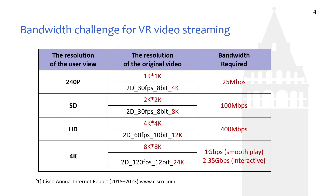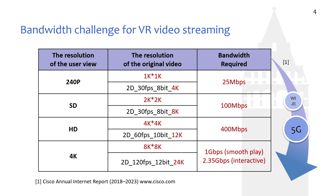From this table, we can see that if the user wants to watch an SDVR video in the user view, the overall resolution for the original video is about 8K, and it requires a bandwidth of 100 Mbps, which could be supported by traditional Wi-Fi. However, if the user wants to watch an HDVR video, the bandwidth could be as high as 400 Mbps, which requires a 5G network. If the user wants to watch the full KBR video — the most popular VR application right now — none of the existing wireless networks can support this application.